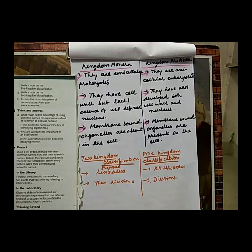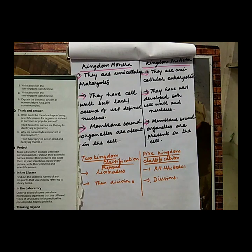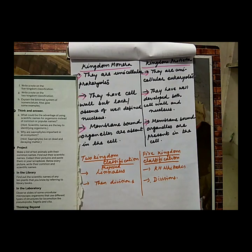Question number 2: Fill in the blanks. A. Two kingdom classification was given by Carlos Linnaeus. B. Five kingdom classification was proposed by R. H. Whittaker. C. Organisms of kingdom Monera have cells without a well-defined nucleus. D. Amoeba moves with the help of pseudopodia. E. In kingdom Plantae, the cell wall is made up of cellulose. F. Special structures for movement of Paramecium are cilia. G. Organisms of kingdom Fungi have a cell wall made up of chitin. H. Living things that belong to a particular kingdom are further divided into phyla.